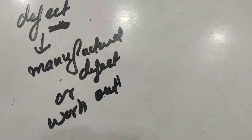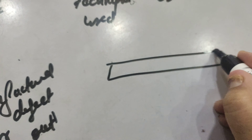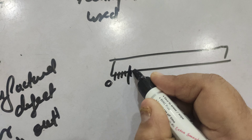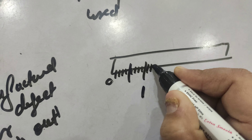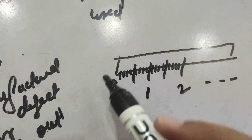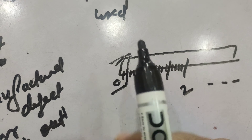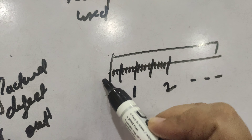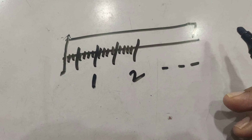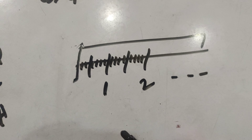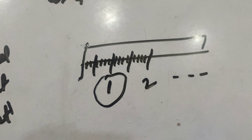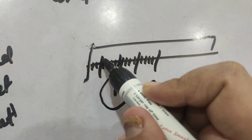For example, you have a scale. We know that the scale starts from 0 and then the numbers are provided: 1, 2, 3, 4, 5 and so on. Suppose the scale is worn out from this edge, meaning this edge is gone and your scale has started from a later position. So while measuring the length of any paper or anything, you keep the scale along with that length and start measuring.